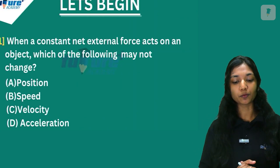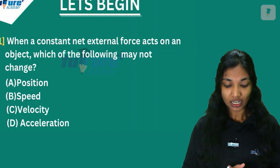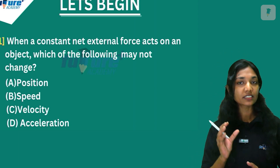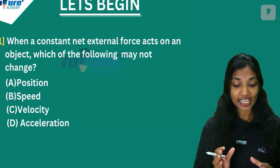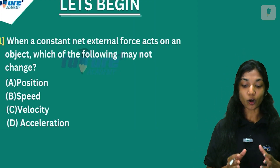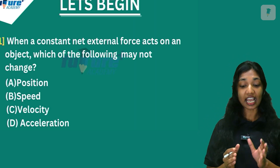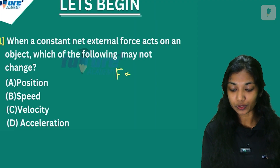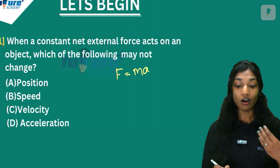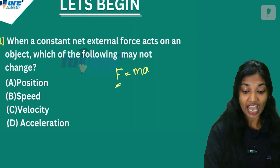First question: When a constant net external force acts on an object, which of the following may not change? Option A: Position. Option B: Speed. Option C: Velocity. Option D: Acceleration. Using F = ma, if force is constant and mass is constant, then acceleration is constant. So the answer is Option D, Acceleration.